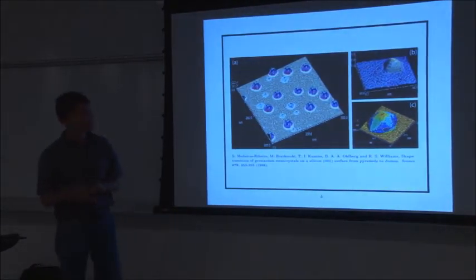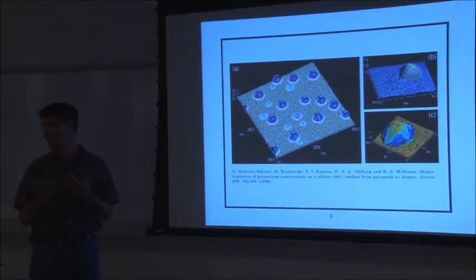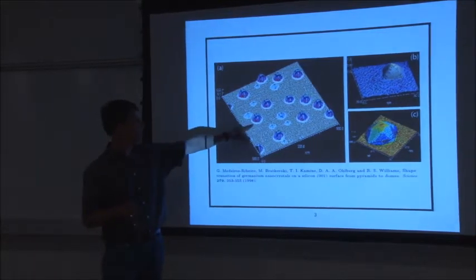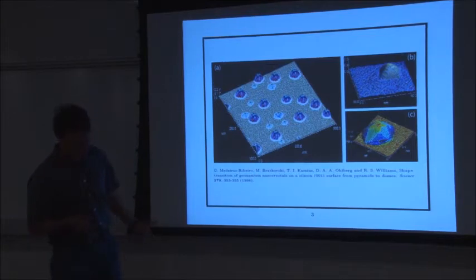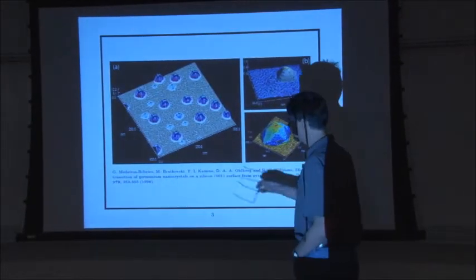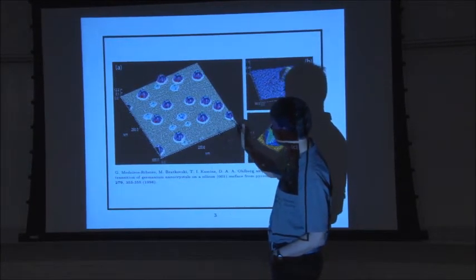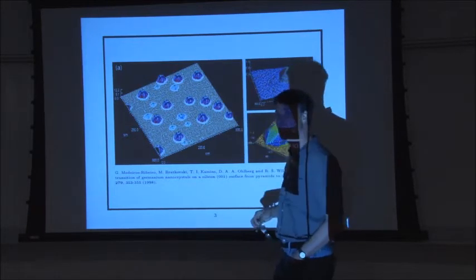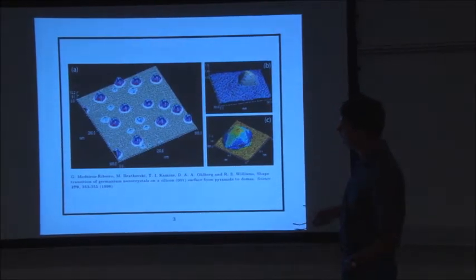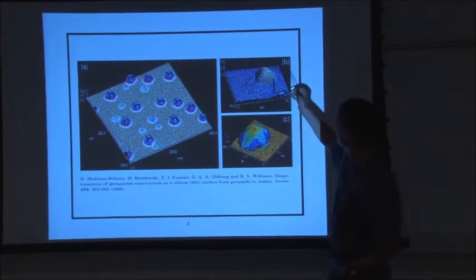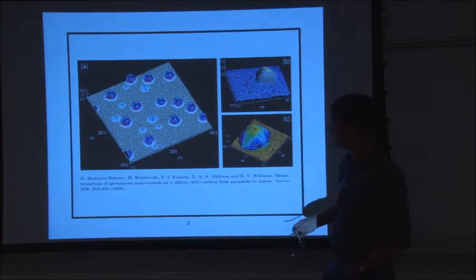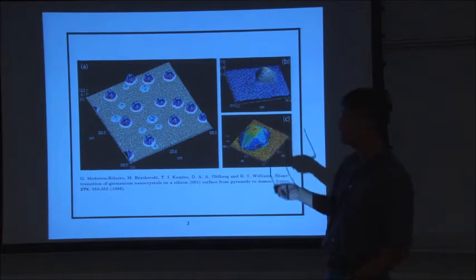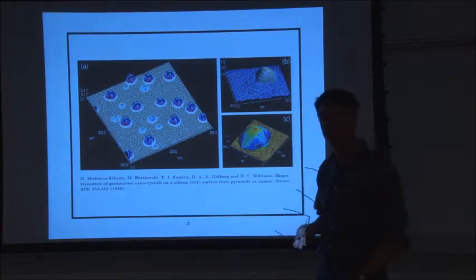If you keep depositing more material, eventually the system says there's too much strain energy and tries to do something better to lower its energy. So it relaxes and forms quantum dots. These appear rather suddenly at a fairly critical thickness of the film — at a critical amount of material deposited, these things appear rapidly as the film evolves. When they ultimately form, they form as faceted objects. That's not too surprising since the surface energy of semiconductor materials is very anisotropic — they are naturally faceted materials. What I want to tell you about is the work we've been doing to simulate this.